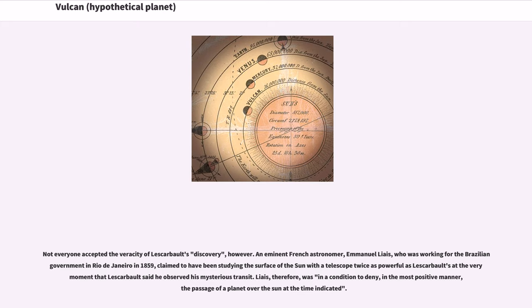Not everyone accepted the veracity of Lascarbalt's discovery, however. An eminent French astronomer, Emmanuel Liais, who was working for the Brazilian government in Rio de Janeiro in 1859, claimed to have been studying the surface of the Sun with a telescope twice as powerful as Lascarbalt's at the very moment that Lascarbalt said he observed his mysterious transit.